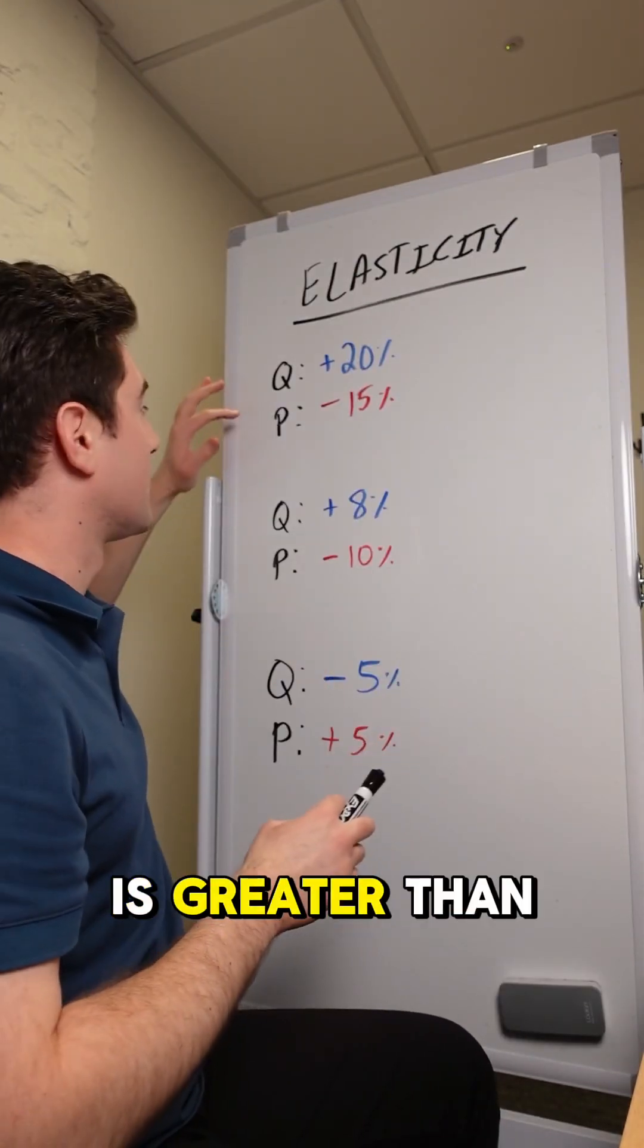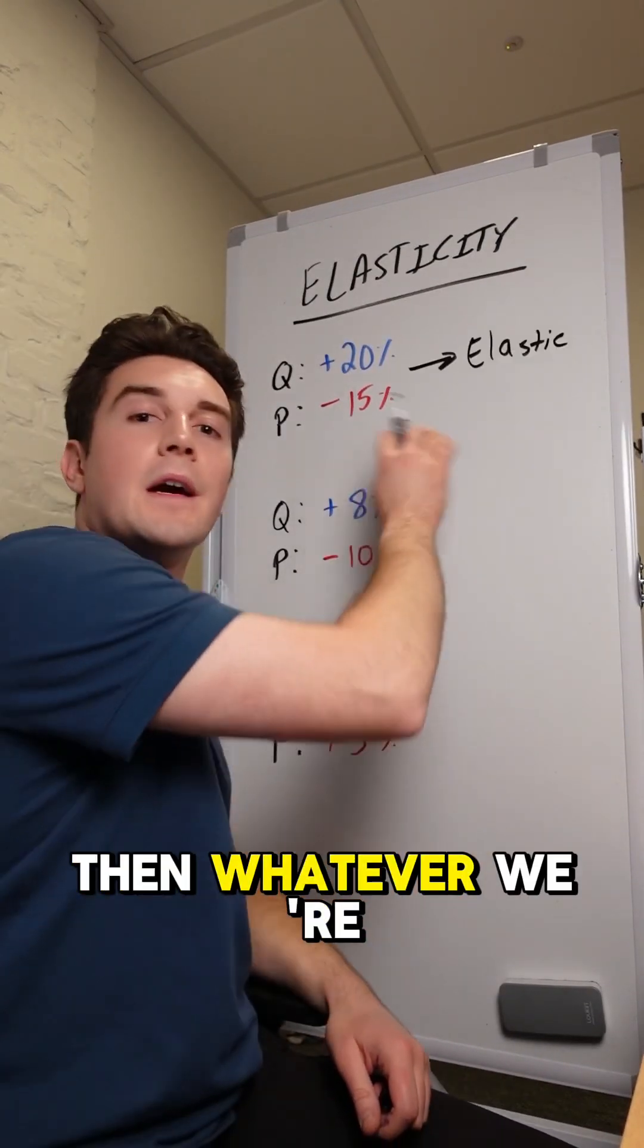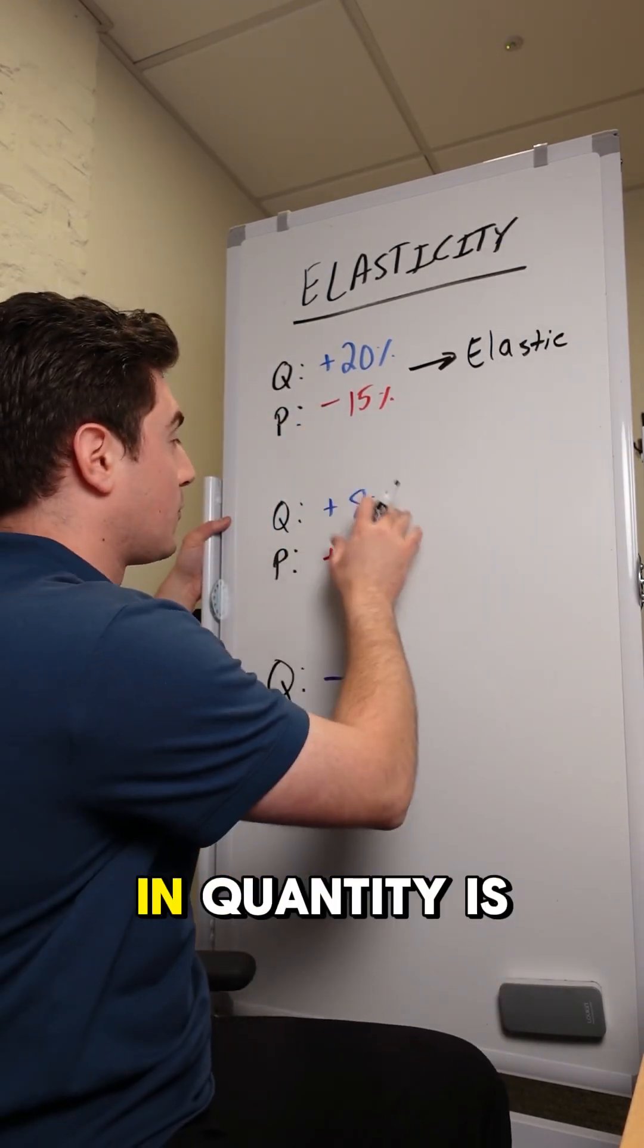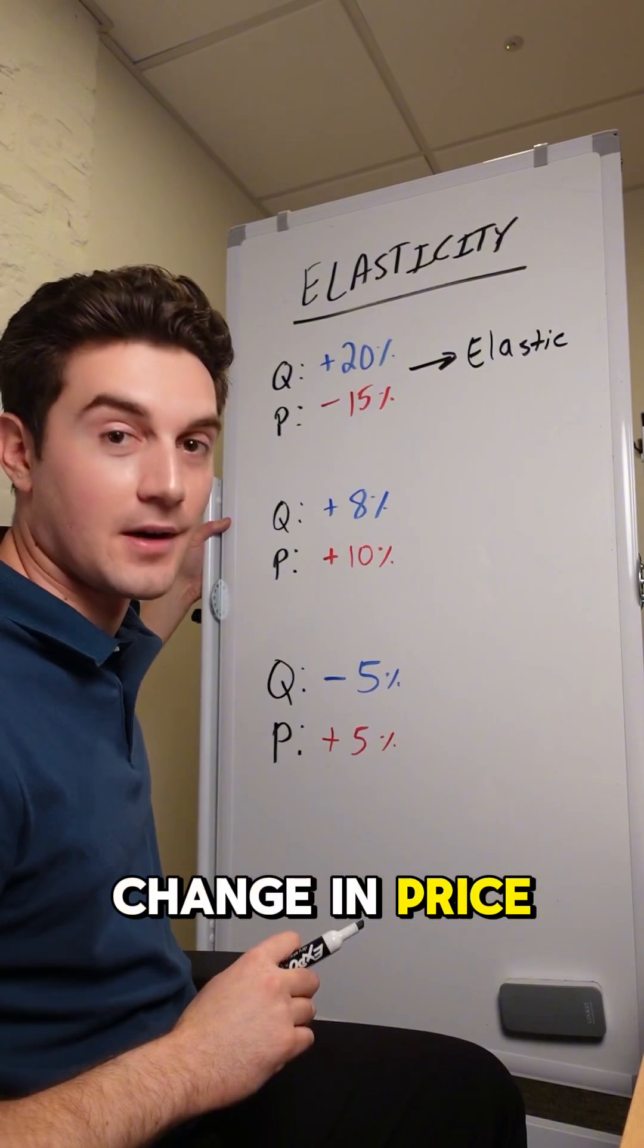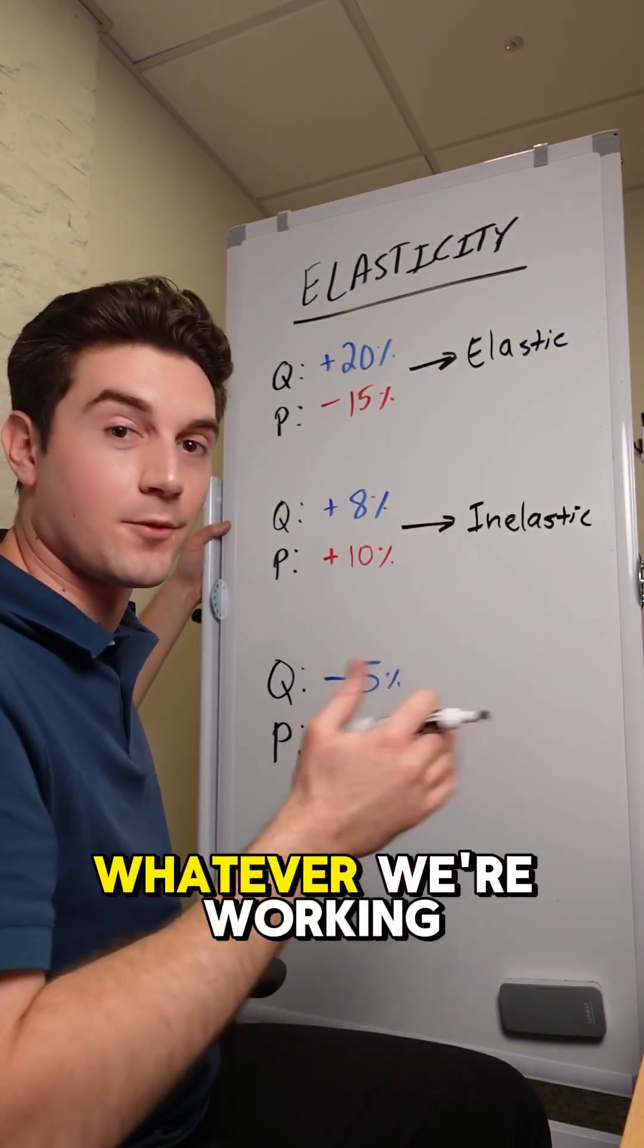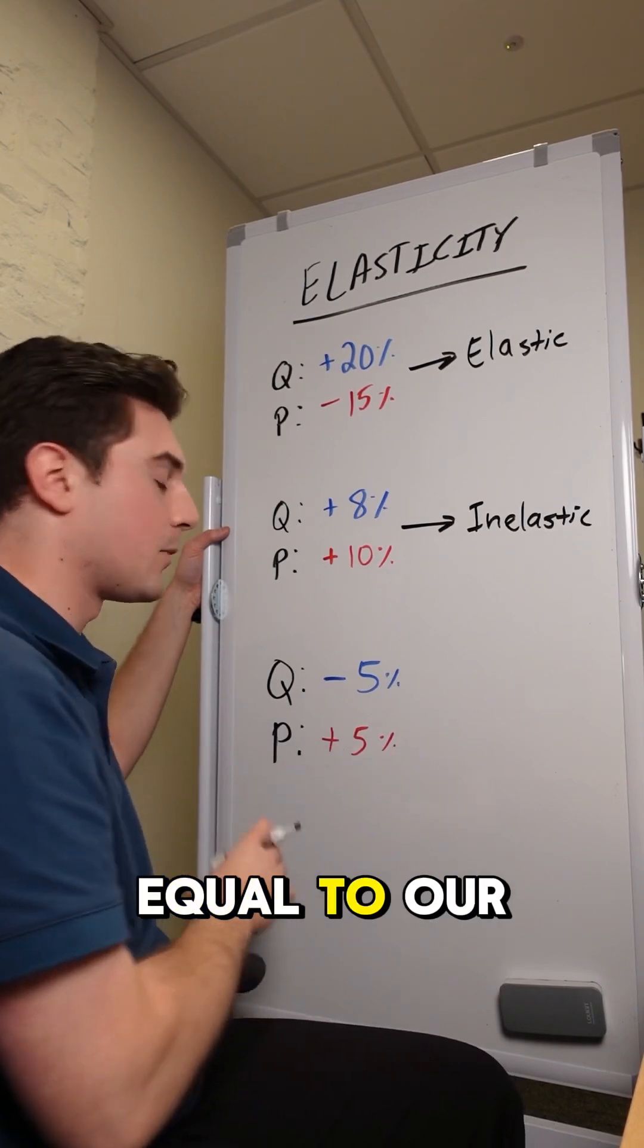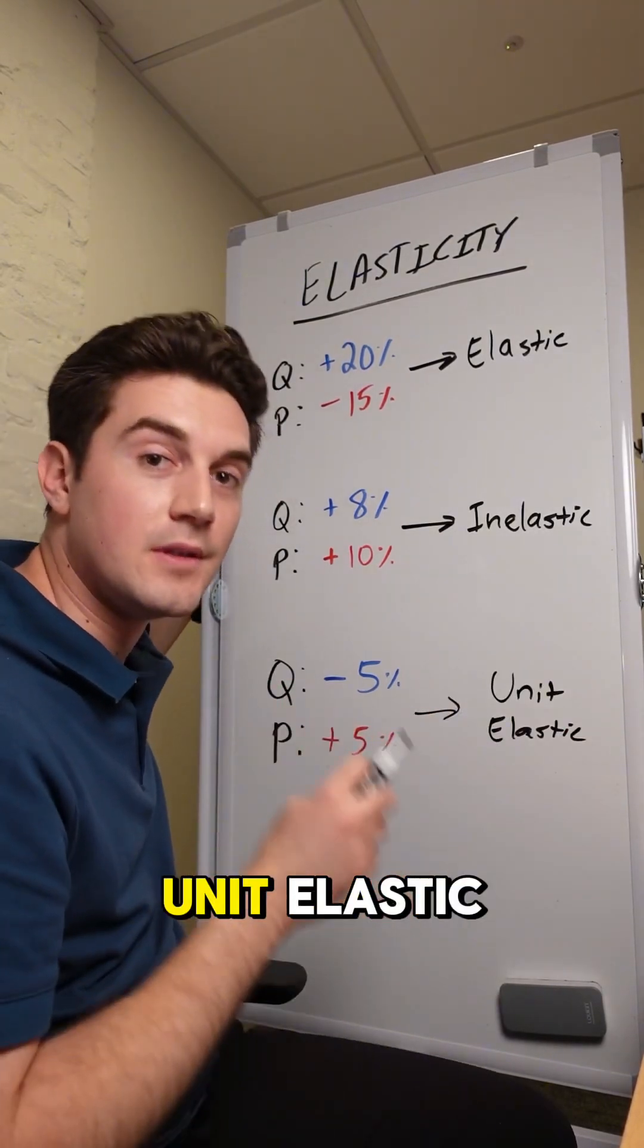If the percent change in quantity is greater than the percent change in price, then whatever we're working with, supply or demand, is elastic. If percent change in quantity is less than percent change in price, then our supply or demand is inelastic. And if our percent change in quantity is equal to our percent change in price, then we are unit elastic.